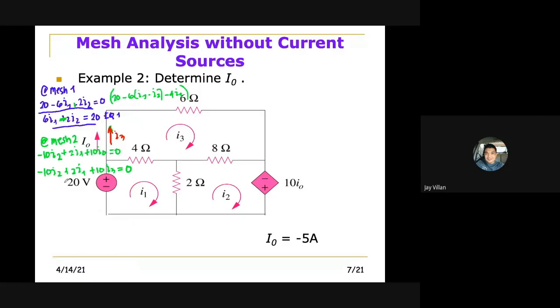So for I3, at mesh 3, we traverse. The first one we encounter is 6, and then 8, and then 4. So we'll just add that. That is equal to 18. So minus 18I3. And then, we have I2 in opposite direction to that of I3. So that is plus 8I2.